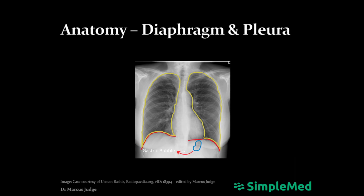Finally, the gastric bubble can also be visualised on a chest X-ray, though not always. What can be seen is the build-up of air within the stomach, and so the size of the gastric bubble can vary widely. The gastric bubble is particularly important when assessing the position of a nasogastric tube after insertion — the end of the NG should be within the confines of the stomach.